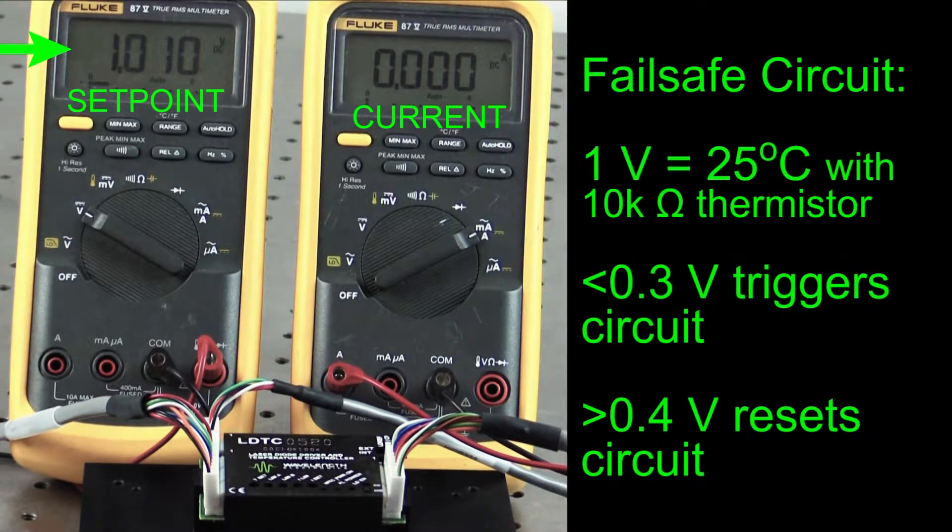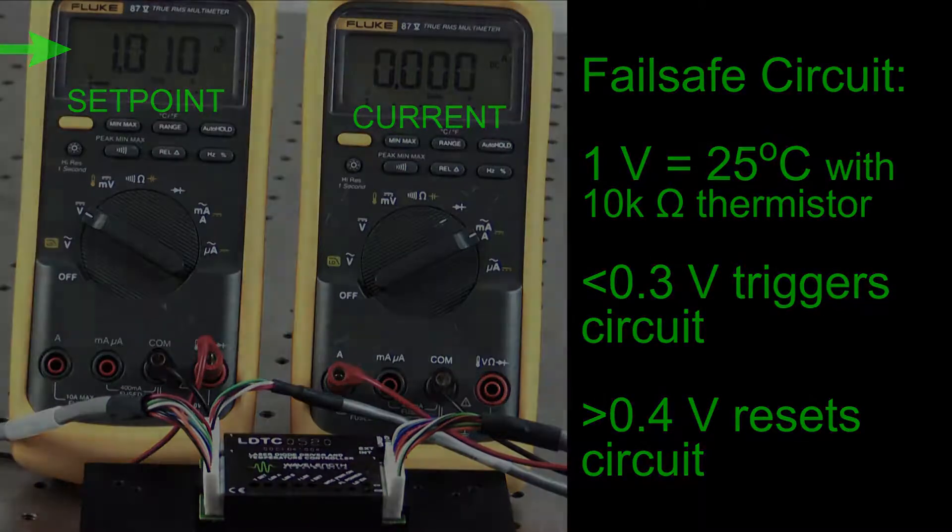The fail-safe circuit will reset the temperature set point to 1 volt if the temperature set point signal falls below 0.3 volts. This corresponds to 25 degrees C when using a 10 kilo-ohm thermistor. A set point greater than 0.4 volts resets the fail-safe circuit.